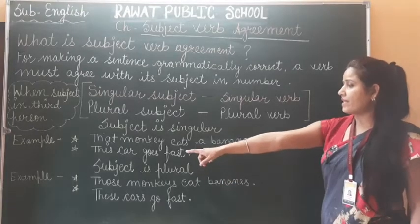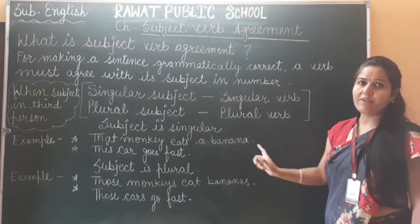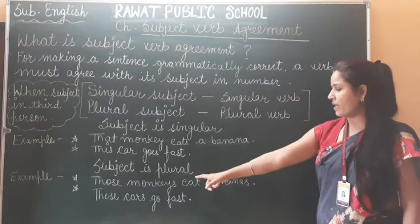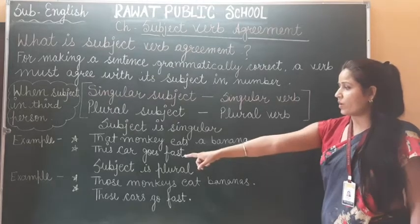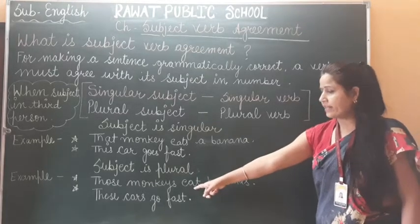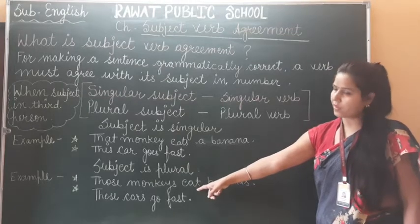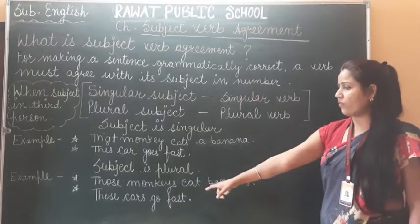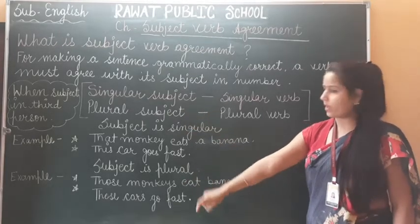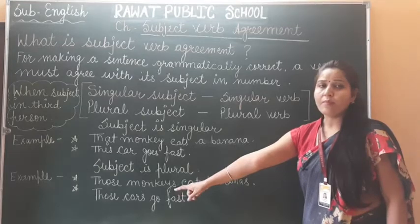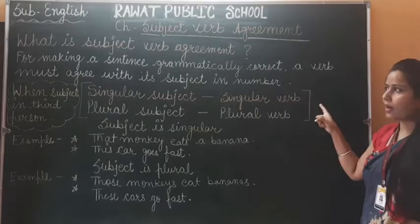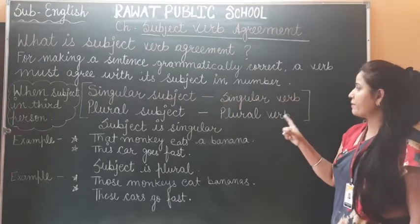When the subject is plural, we write a plural verb. Example: 'Those monkeys eat bananas' — 'those monkeys' is plural subject and 'eat' is plural verb. Another example: 'These cars go fast' — 'these cars' is plural subject and 'go' is plural verb. So with singular subject we write singular verb, and with plural subject we write plural verb.